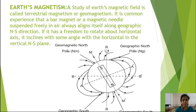Here is the diagram of earth magnetism. This is the geographic north pole, here is the geographic south pole, and this is the geographic axis.